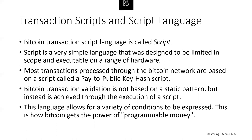Bitcoin Script is a simple language designed to be limited in scope and executable on a wide range of hardware — even an embedded device can handle it. It requires minimal processing and can't do many of the fancy things modern programming languages can do. This is a deliberate security feature for validating programmable money. Most transactions use a script called pay-to-public-key-hash (P2PKH), though locking scripts can express a vast variety of complicated conditions. To understand more complicated scripts, we must first understand the basics of transaction scripts and the script language.